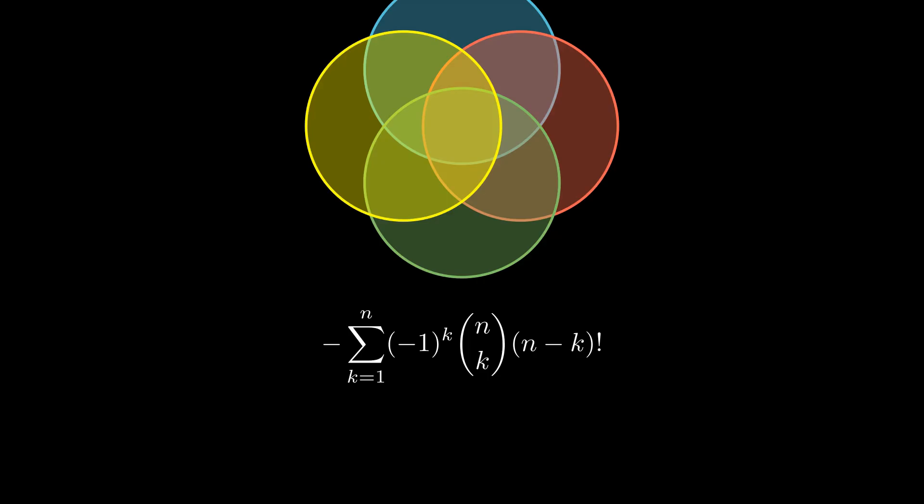Notice how there is also a minus in front of the sum. Once we write our binomial coefficient in its explicit form, the expression becomes even more simple. Since n! does not depend on k, we take it outside.